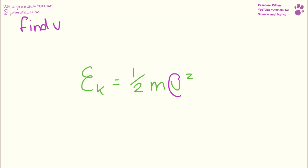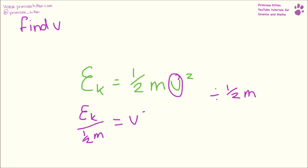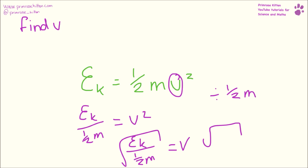It's slightly more complicated if we want to find v, because it's multiplied by things and it's squared. The first thing we're going to do is divide by half m, which gives us EK divided by half m. Then we need to square root it, giving us the square root of EK over half m equals velocity. You can either rearrange first or put the numbers in — either way works.